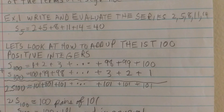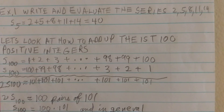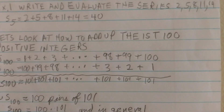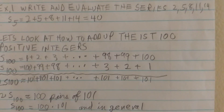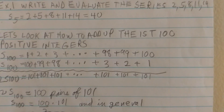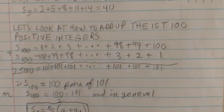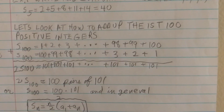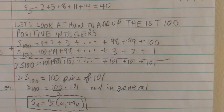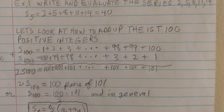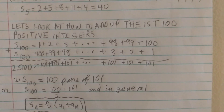For example 1, we can write and evaluate the series 2, 5, 8, 11, 14. S sub 5 is simply 2 plus 5 plus 8 plus 11 plus 14, which added on your calculator comes to 40. Please make sure you're doing this with me with your calculator.